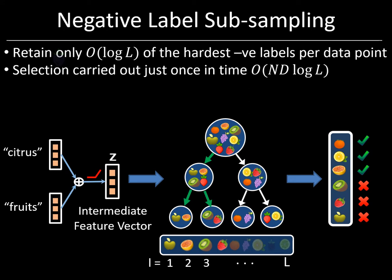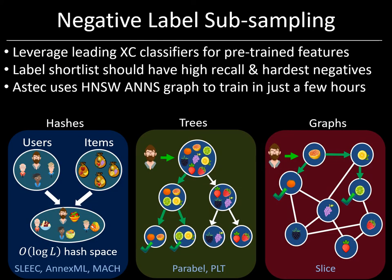The objective in Module 2 is to reduce the extreme classification task for each training point to a traditional classification task by selecting all of the positive labels for the point and also its order log L hardest to classify negative labels. This can be achieved by leveraging the negative subsampling technique based on approximate nearest neighbor search that lies at the heart of every highly scalable extreme classifier for pre-trained features. For example, you could take the hashing technique from MAC, the tree-based technique from Parabel, or the graph-based technique from Slice and apply any of these just once to the frozen intermediate features Z, reducing the classification problem from an L-label problem to an order log L label problem without any great loss in accuracy.